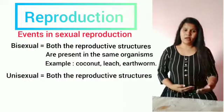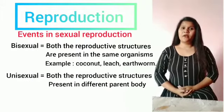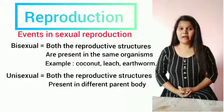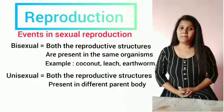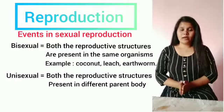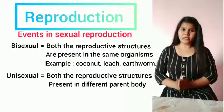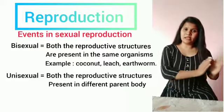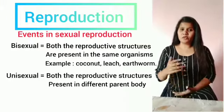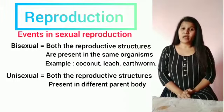Coming to unisexual plants, like papaya plant and date palm plant, the male reproductive organ is present in one plant whereas the female reproductive structure is present in another plant. So a unisexual organism or unisexual plant is also called heterothallic or dioecious. Please remember these words because they are very important.